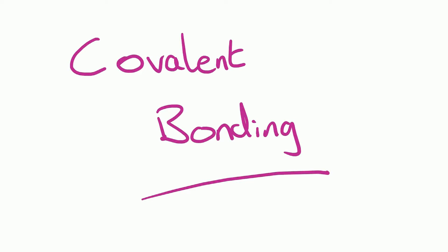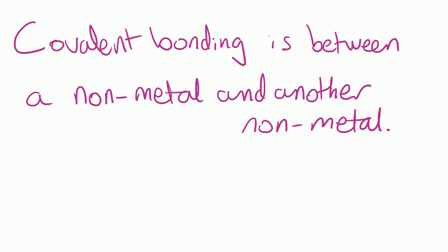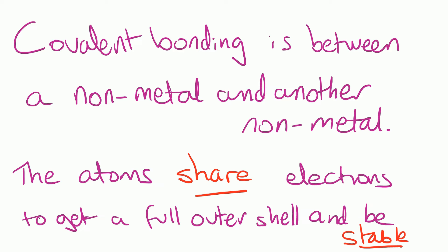Hi everyone and welcome to Revised Chemistry with Mr B. In this video we're going to be revising covalent bonding, which is a very important topic for paper 1. The first thing we need to remember is covalent bonding is between a non-metal and another non-metal atom, and the atoms share electrons to get a full outer shell and be stable.